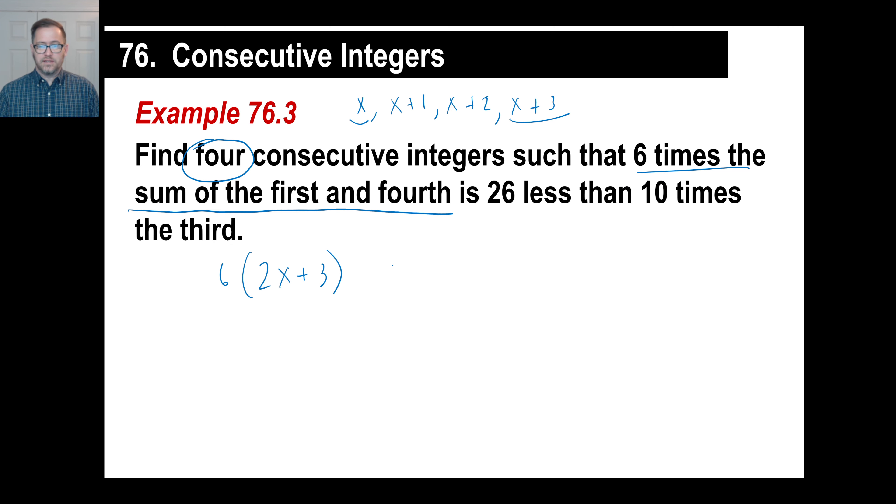And again, this is 26 less than. So, on the seesaw, you know, this is like this. So, to make this side even, we're going to have to add 26, right? To this side. So, pushes down and everything. So, this is 26 less than that. So, there's plus 26. Then, less than what? 10 times the third. Well, 10 times the third is 10 times that one, x plus 2.